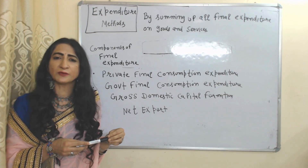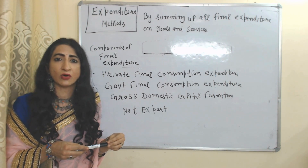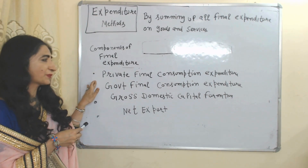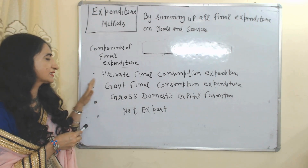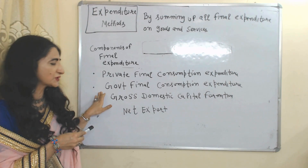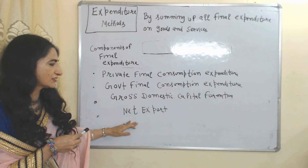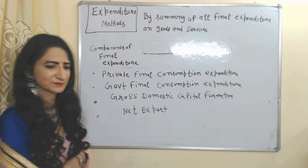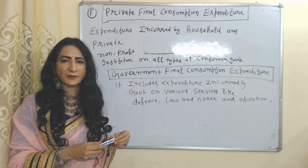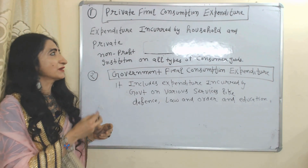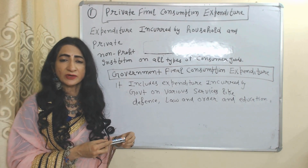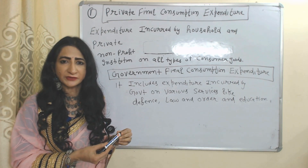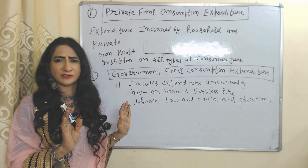Now we will see the expenditure method. According to the expenditure method, we can calculate national income by adding all components of final expenditure. The components of final expenditure are: private final consumption expenditure, government final consumption expenditure, gross domestic capital formation, and net export. The first component, private final consumption expenditure, includes expenditure incurred by households and private non-profit institutions on all types of consumer goods.